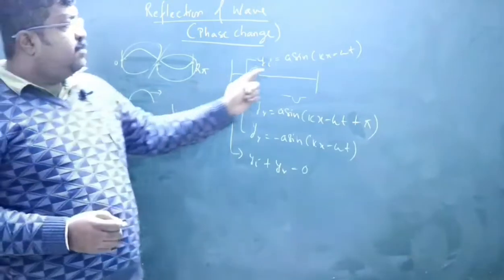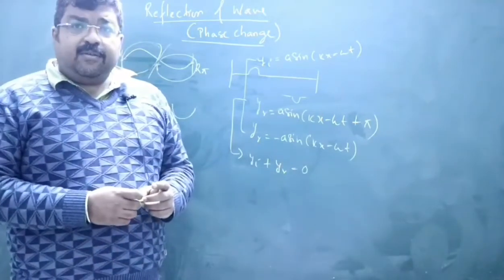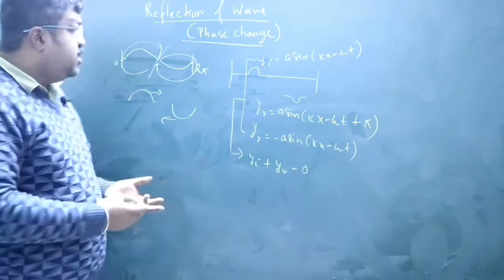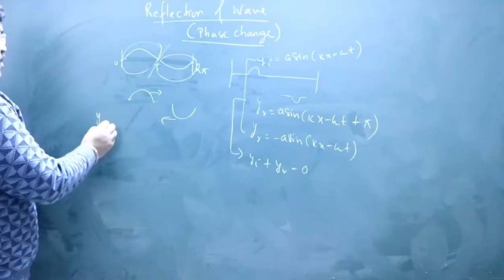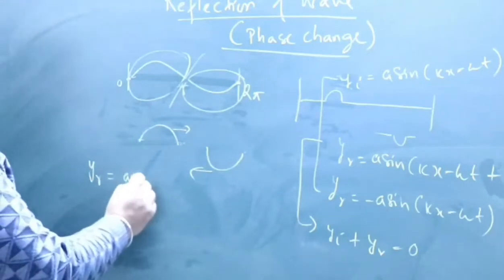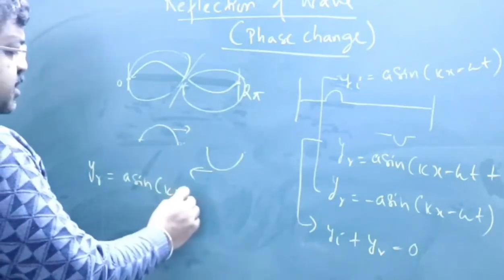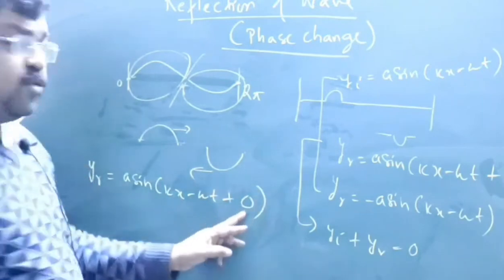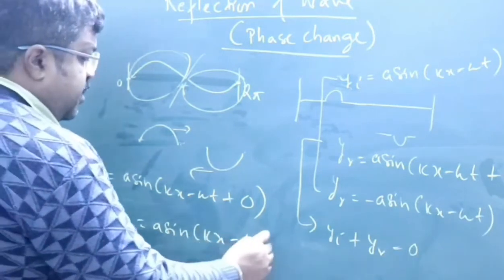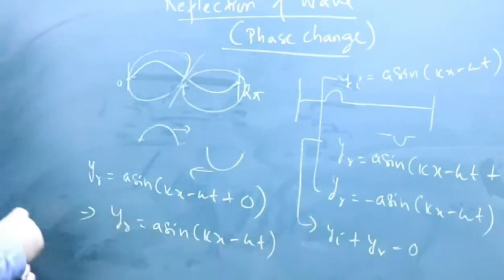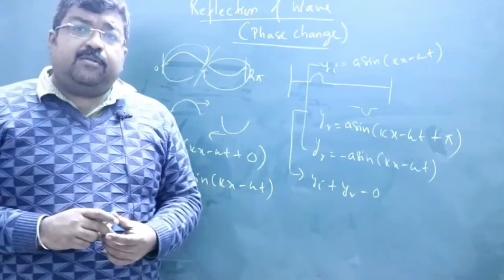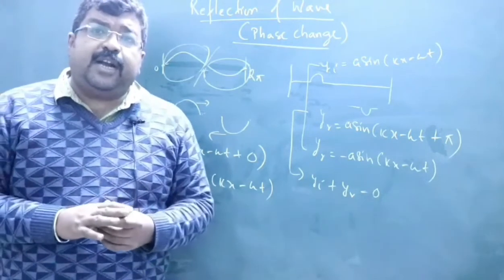Similarly, if reflection takes place from a free end — if this is not a rigid end but a free end — then there is no phase change. In that case, the displacement of the reflected wave can be written as y_r = a sin(kx − ωt + 0), so y_r = a sin(kx − ωt). This is when reflection takes place from a free end.